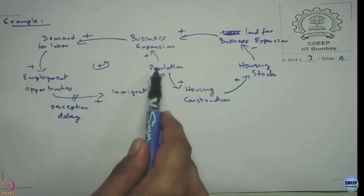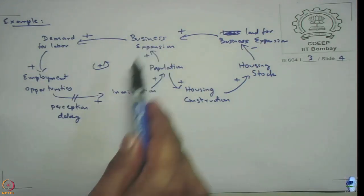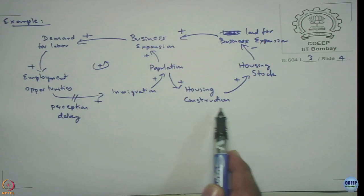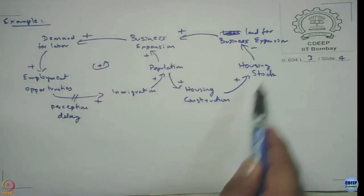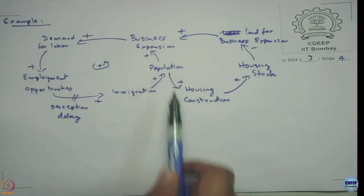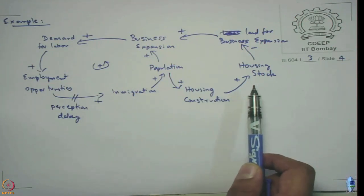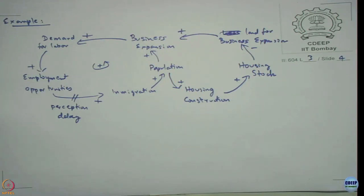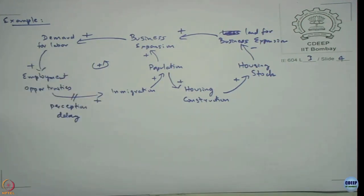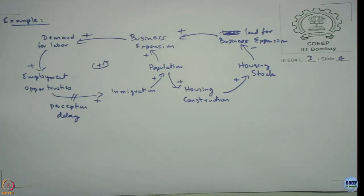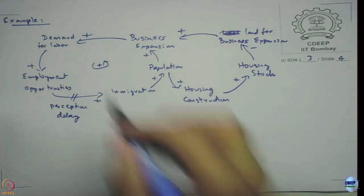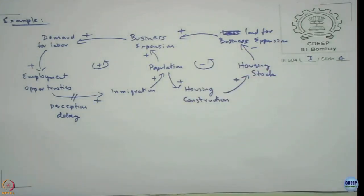One loop goes from population around through business expansion. The second loop charts population going through housing. When you read it: as population increases, housing construction increases, resulting in more housing stock, which reduces land for business expansion. Less land means less business expansion, which reduces demand for labour, which reduces employment opportunities. After a lag — or after the perception of employment opportunities falls — in-migration reduces, which eventually saturates the population in the region. This outer bigger loop becomes the limiting factor for resources.